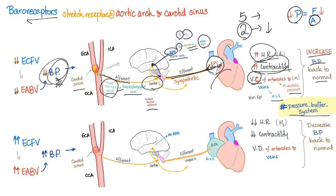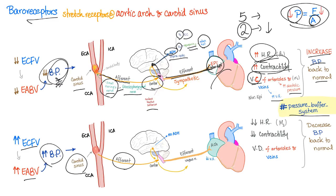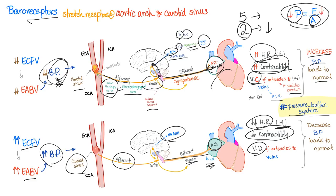That's why we call baroreceptors a pressure buffer system. On the other hand, if you have lots of extracellular fluid volume — meaning effective arterial blood volume is high and blood pressure is high — the carotid sinus senses the change. The afferent signal via Hering's nerve goes to the brain center. Now, no ADH. The efferent here is the parasympathetic vagus nerve coming from the medulla oblongata, going to the heart, secreting acetylcholine through M2 muscarinic receptors — decreasing heart rate, decreasing contractility, causing vasodilation of arterioles and veins. This leads to decreased blood pressure and back to normal. That's why we call baroreceptors a pressure buffer system.